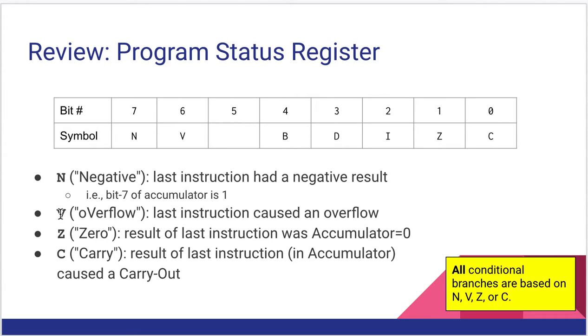Bit 6 is our overflow bit, or the V-bit for short. It means that the last instruction caused an overflow. In other words, if we interpret the last instruction as, for example, a signed add or signed subtract, bit 6 will tell us if that signed operation overflowed.